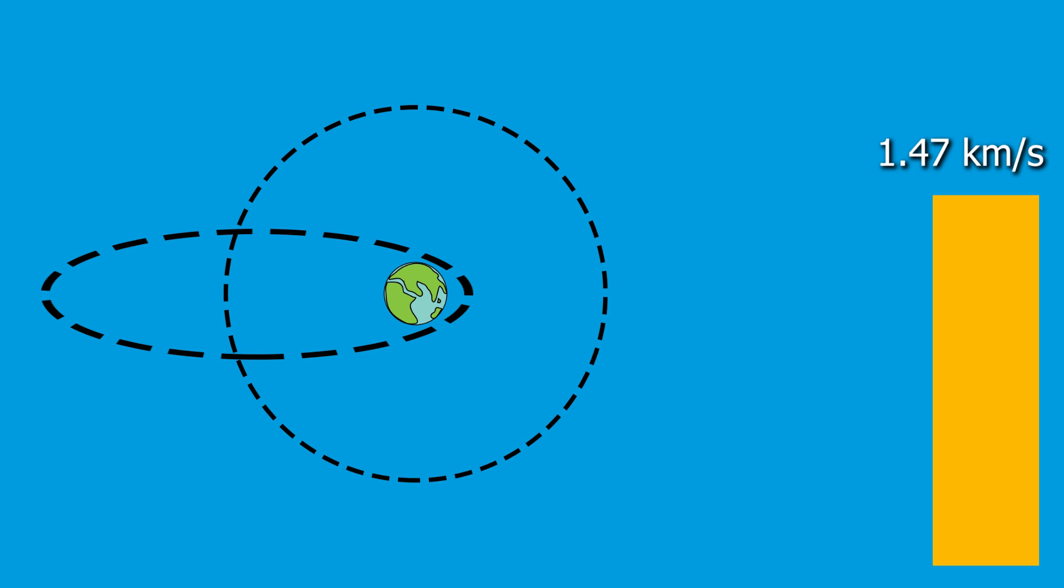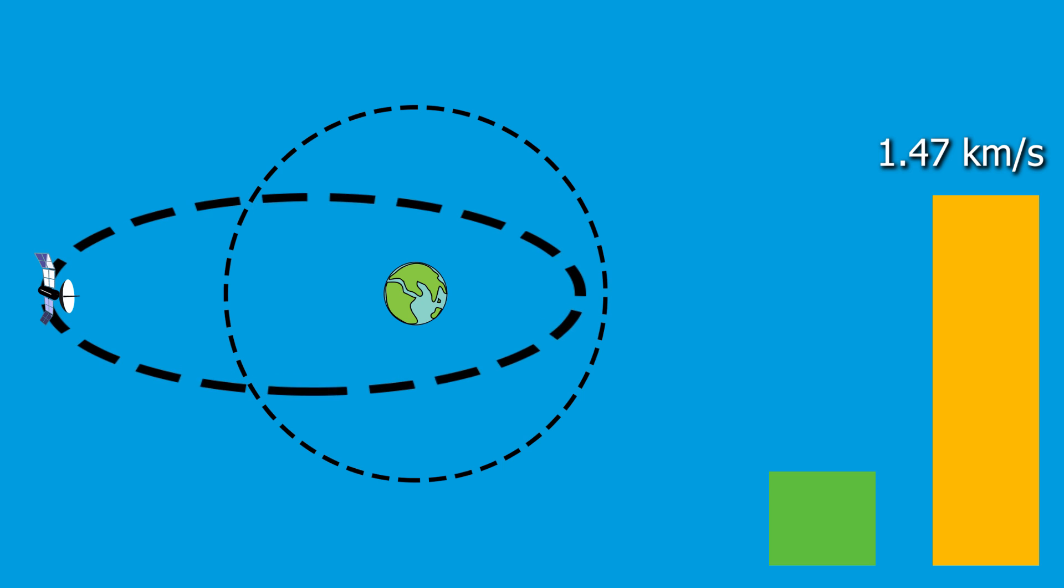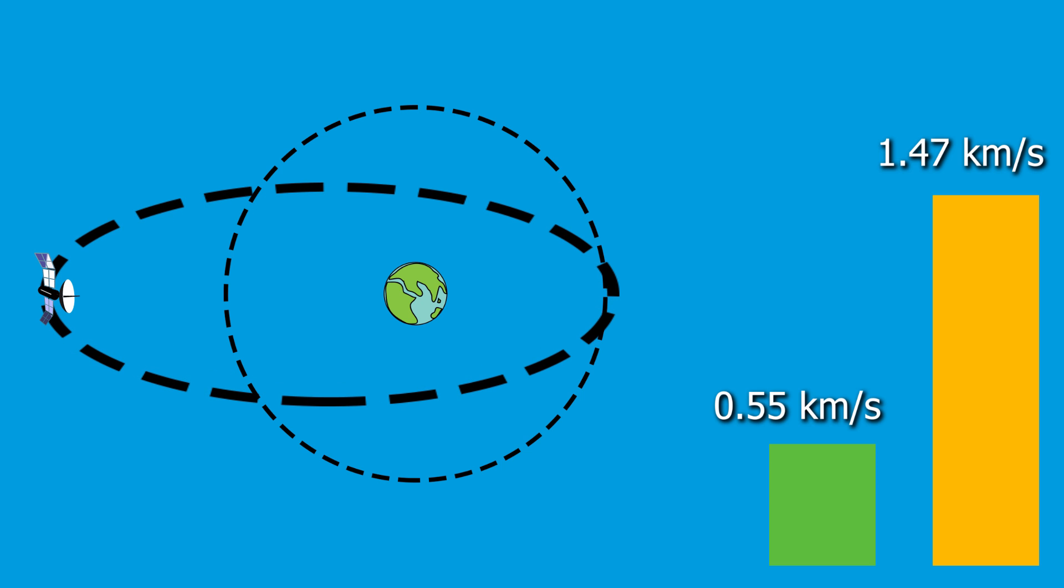So now let's look at the Arabsat orbit and see what procedure they probably have to follow. Once they get to apogee, they're going to have to turn on their engines and perform a burn that gives them a delta V of 0.55 kilometers per second, which is a lot less than the 1.47 kilometers per second that was needed for the typical GTO.